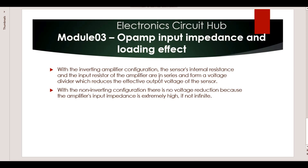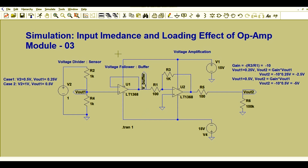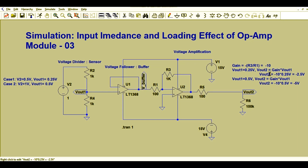Let us go into Altium. This is the voltage divider section, this is the voltage follower section, and this is the voltage amplification section. The first output is the divider output — Vout1 — which is connected to the voltage buffer. The buffer output is connected to the inverting amplifier. The gain of this inverting amplifier is minus 10.